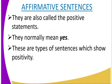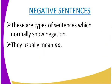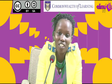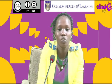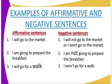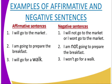Affirmative sentences are positive statements — they always mean yes, and they show positivity. Negative sentences, from the word negation, are sentences which show negation — they tend to mean no. To differentiate between affirmative and negative sentences, we can look at the following example: 'I will go to the market' — that is a positive or affirmative sentence.